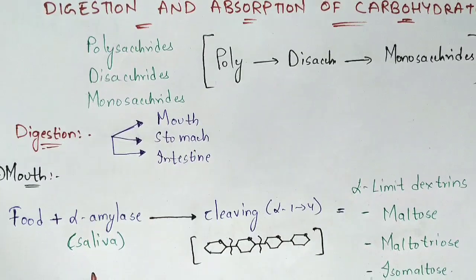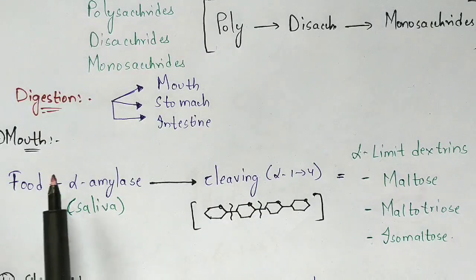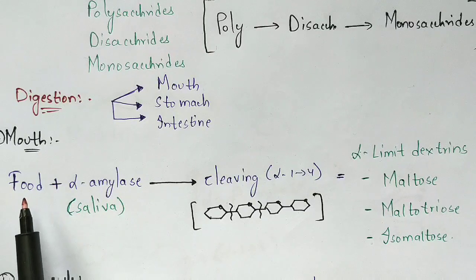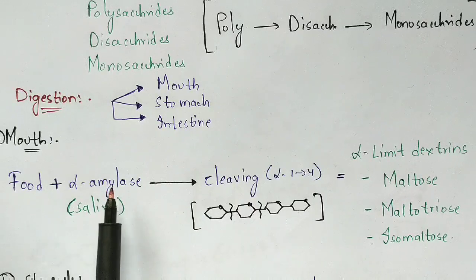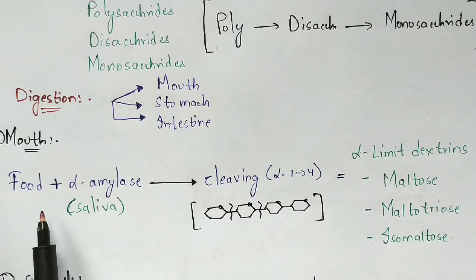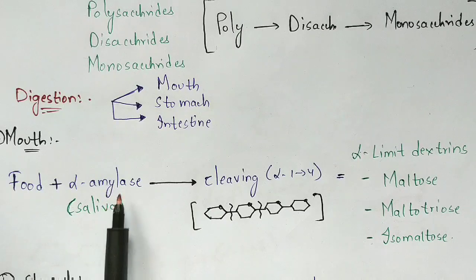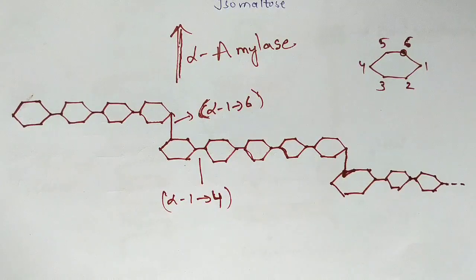Let us learn how digestion occurs in the mouth. When you take food and keep it in your mouth, it gets mixed with saliva. We know that saliva consists of the alpha amylase enzyme. The food consumed will get interacted with this alpha amylase enzyme.